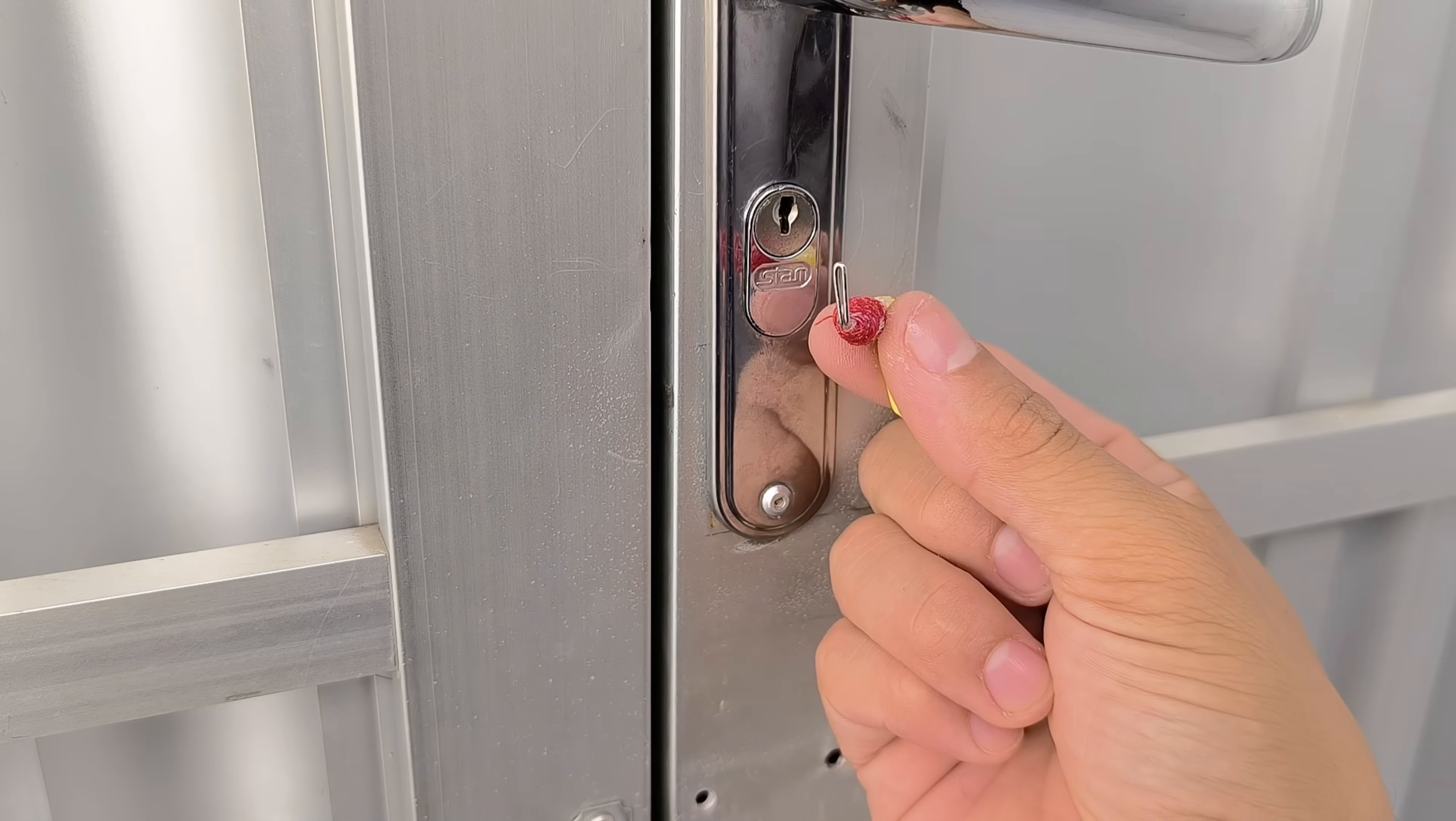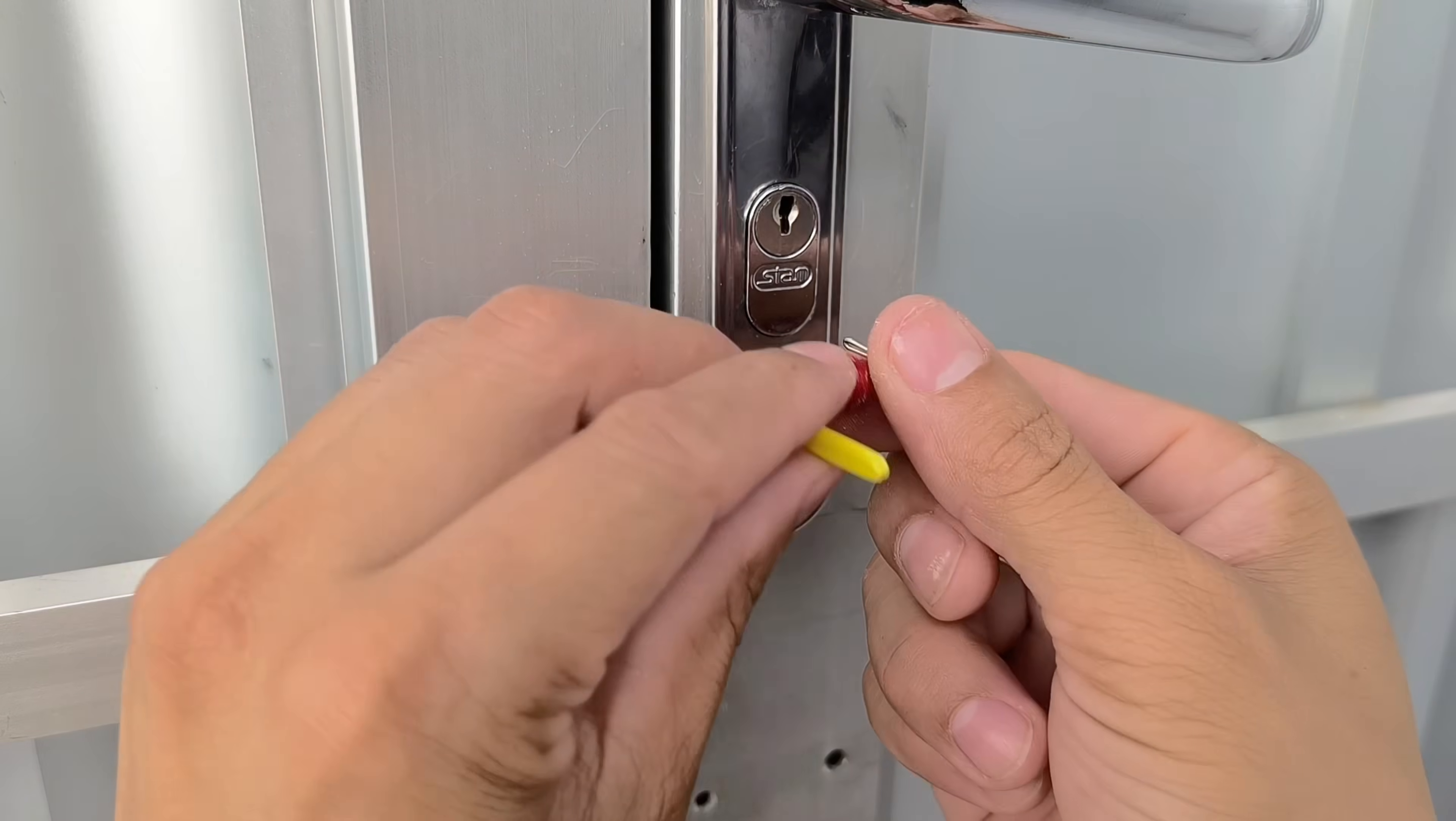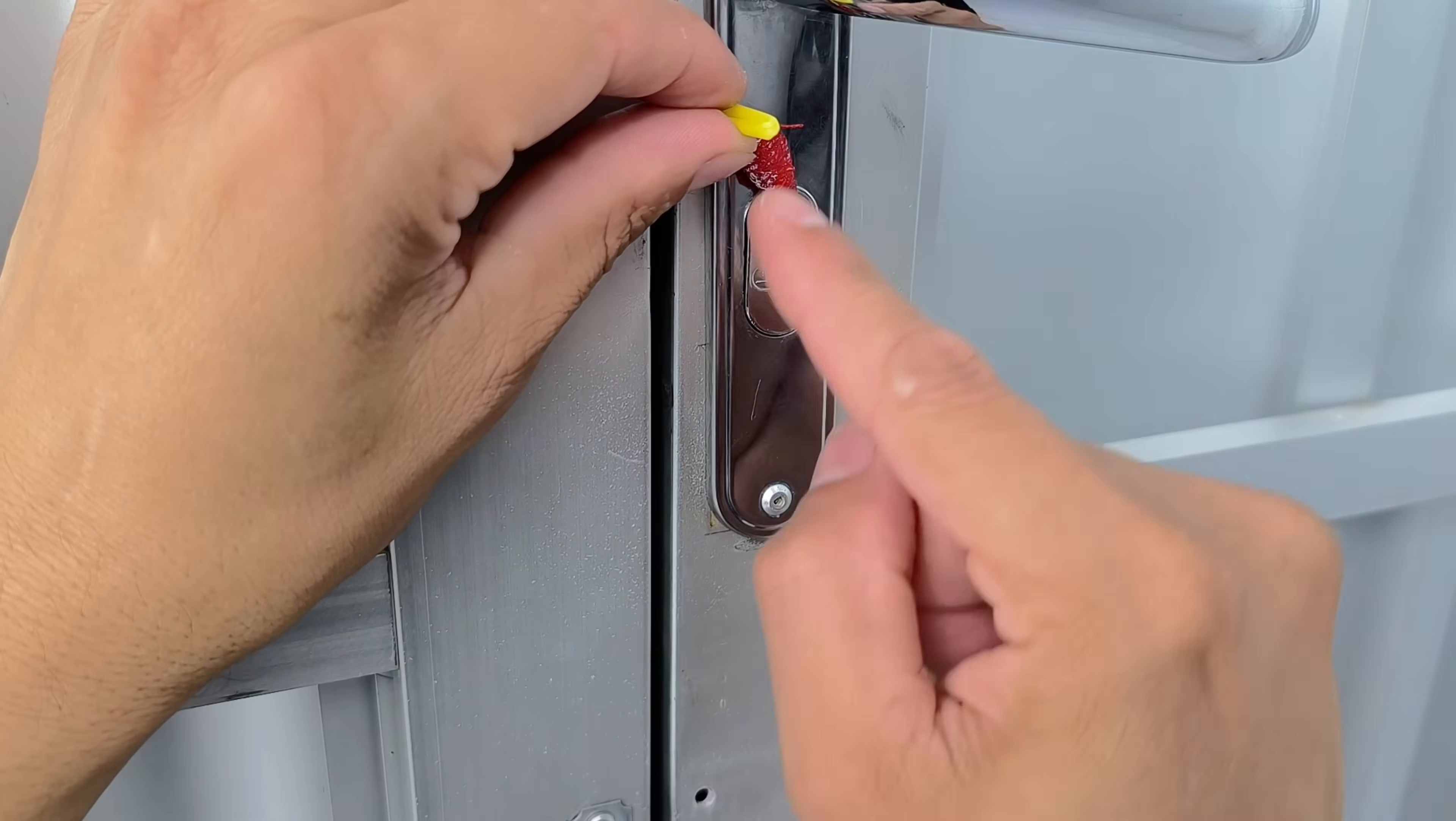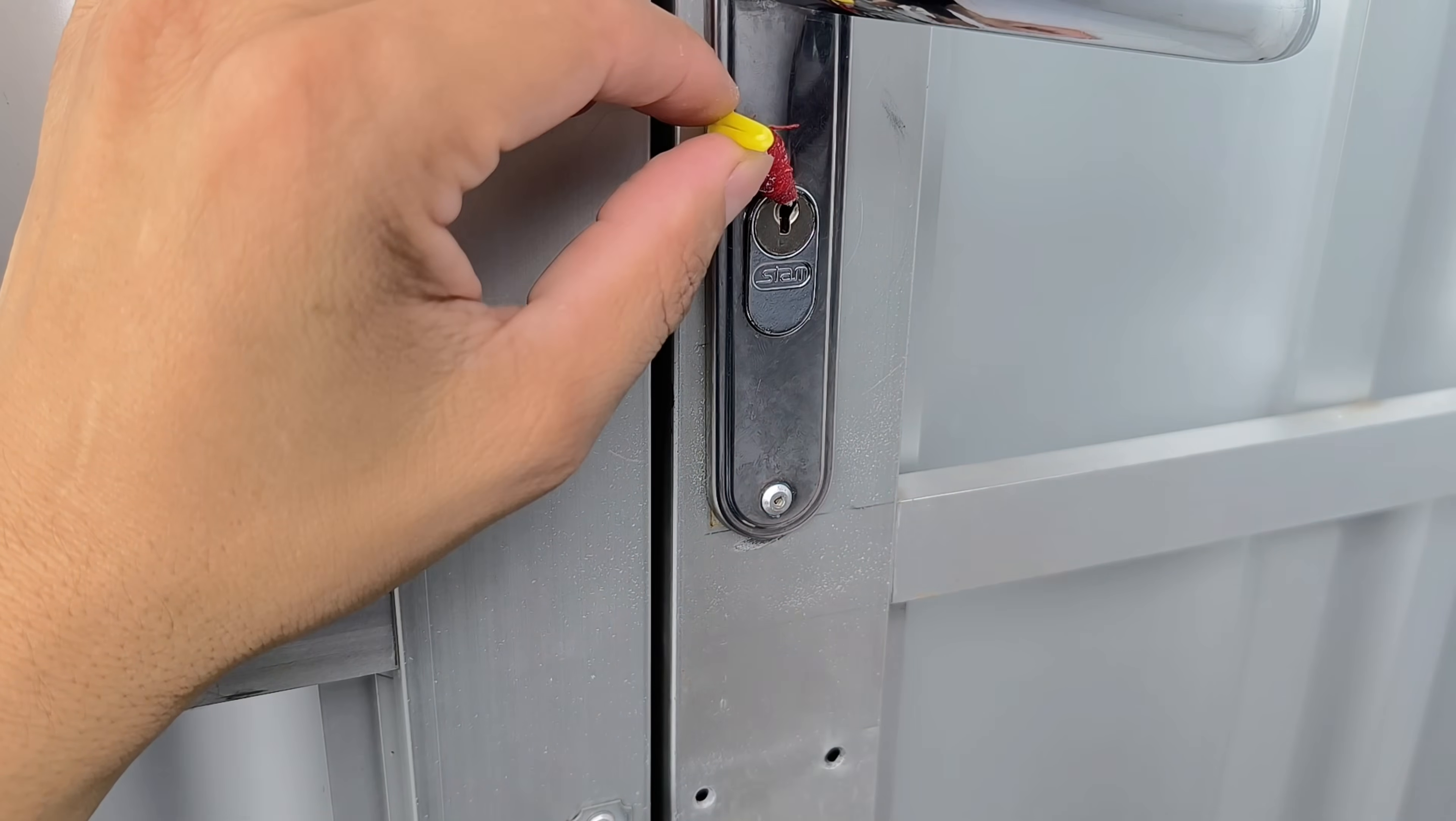Insert the crank into the top of the lock cylinder. It will act as a lever, allowing for easy circular movements. Always force the crank clockwise, simulating the rotation of a regular key.